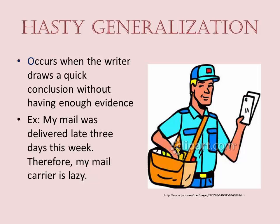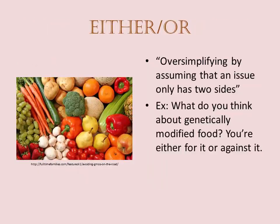For example: my mail was delivered late three days this week. Therefore, my mail carrier is lazy. This is a hasty generalization because there is not enough evidence to prove that the mail carrier is lazy. There could have been excess traffic on those particular days, the mail carrier's car could have had trouble, or the mail carrier could have been ill and there was a temporary replacement unfamiliar with the mail routes. It is important to have appropriate information to back up a claim.